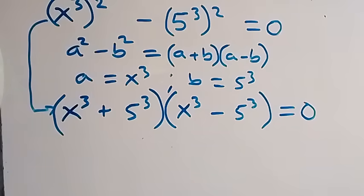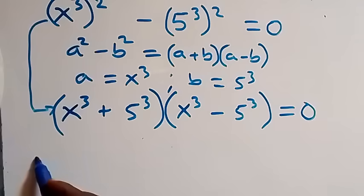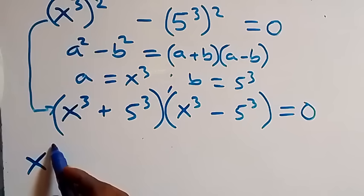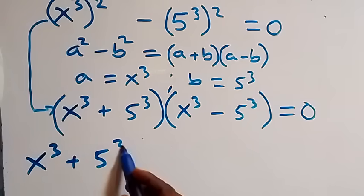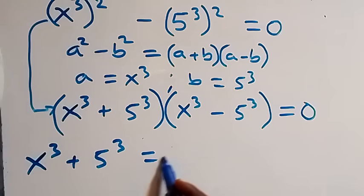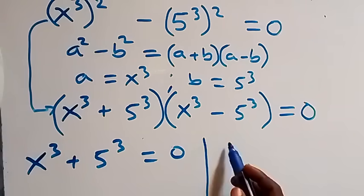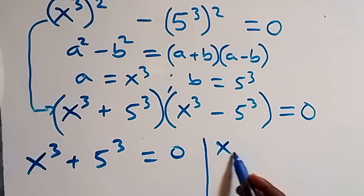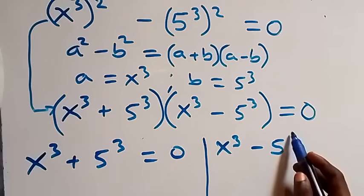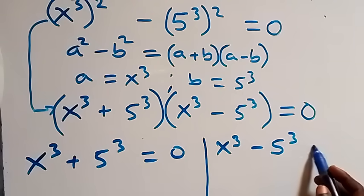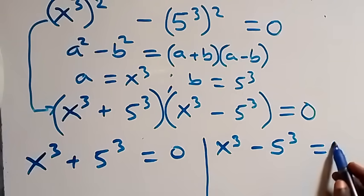At this point we have two possible cases: x raised to power 3 plus 5 raised to power 3 equals 0, or x raised to power 3 minus 5 raised to power 3 equals 0.